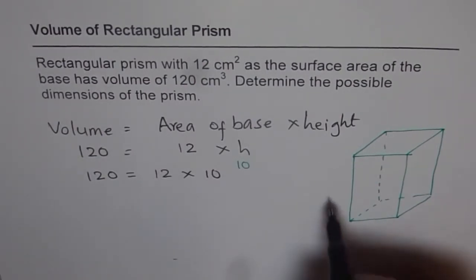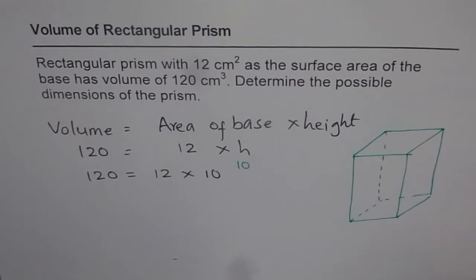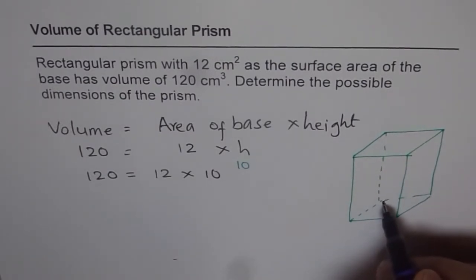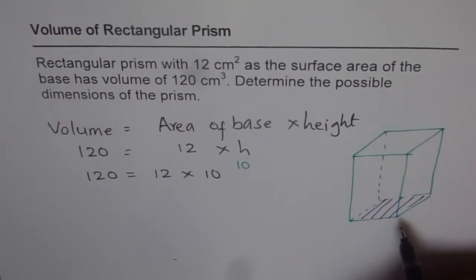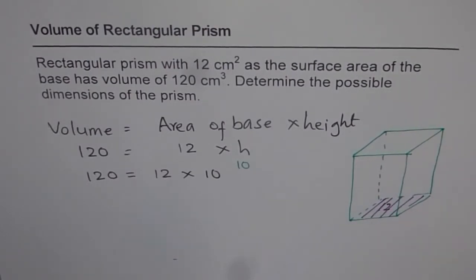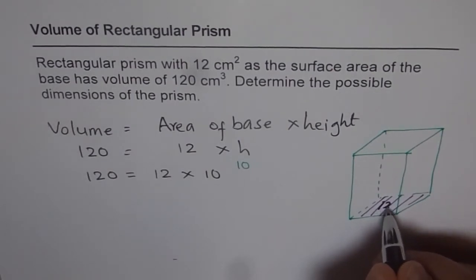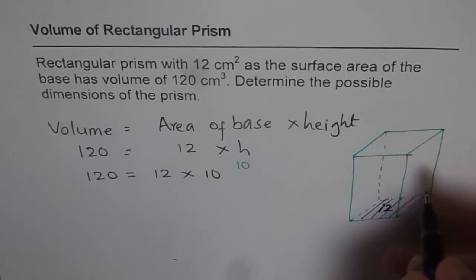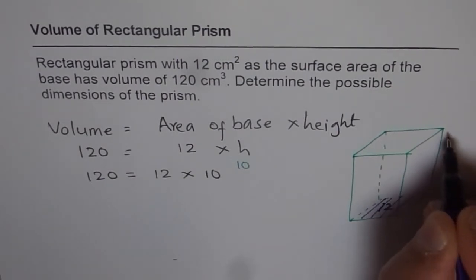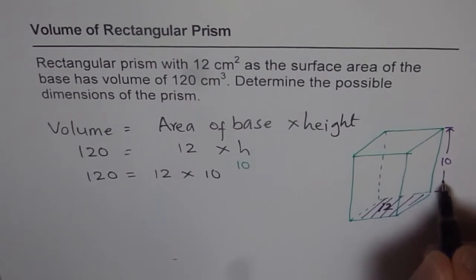What we are given is that this area of the bottom is 12 cm². This is 12 cm², this is what we are given. And what we found was very interesting. We found the height, height of 10, which is not given to us. Do you see that? That is interesting. So we found the height.